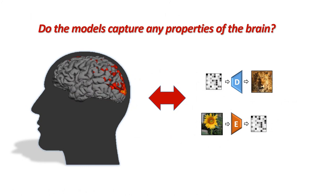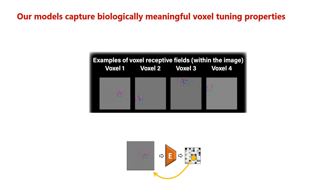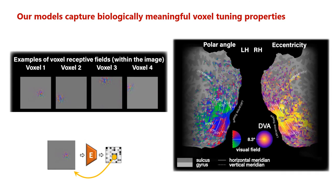Finally, we study whether our trained models are biologically plausible in terms of the receptive field they learned. By computing the gradient of each voxel output in the encoder with respect to the input image, we reveal the voxel's receptive field. We estimate the location and radius of the receptive field and plot the resulting retinotopy map of all the voxels. This map shows standard and non-retinotopic structure which emerged entirely in a data-driven manner. One can clearly notice the vertical-horizontal meridian transitions in the polar angle plot, and similarly find increasing eccentricity from the fovea-periphery axis and from low to high visual areas. Altogether, this suggests that beyond reconstruction and classification performance, our model virtually learned biologically meaningful voxel tuning properties.